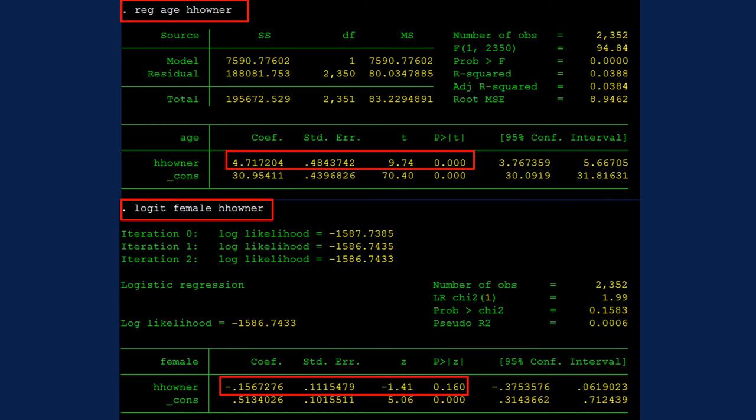These results are examples of age and female among the set of covariates. I cannot show all results of covariates, so I just chose these two. As you can see, age and female are in the place of outcome.